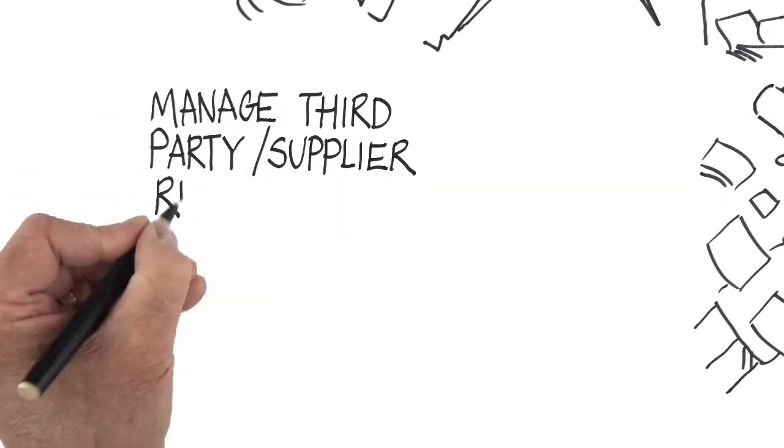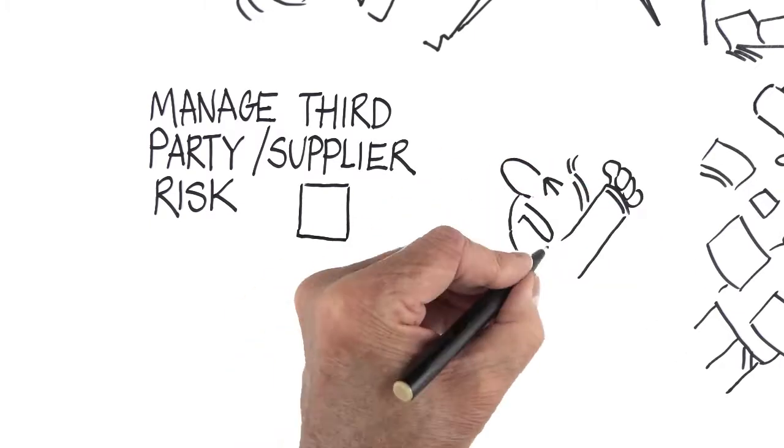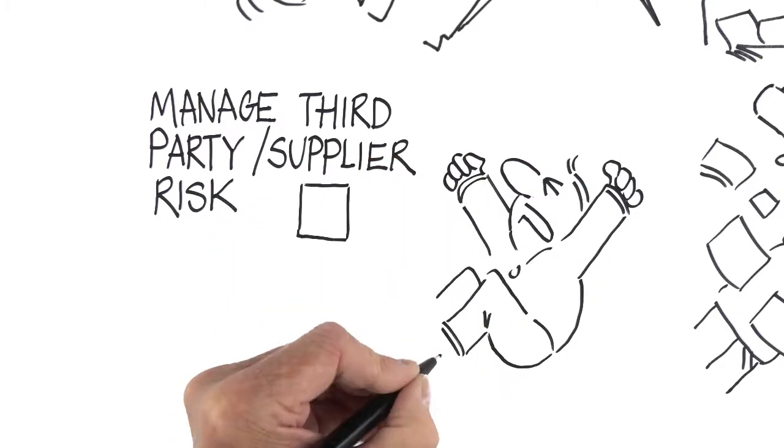One more box to go. Third party and supplier risk. How do you manage that? The task seems almost insurmountable.